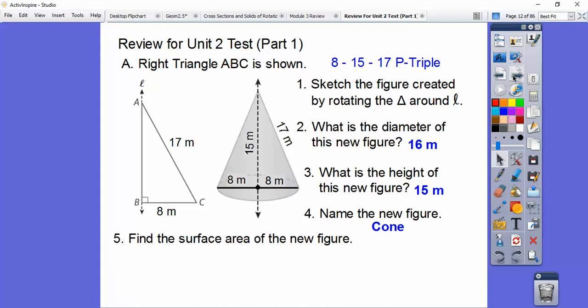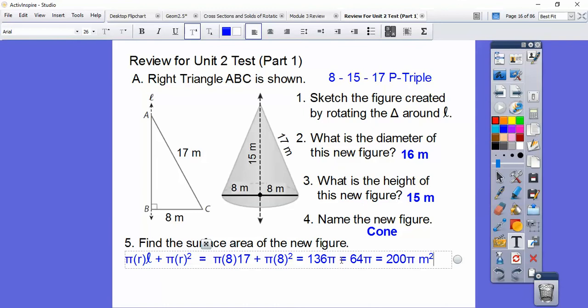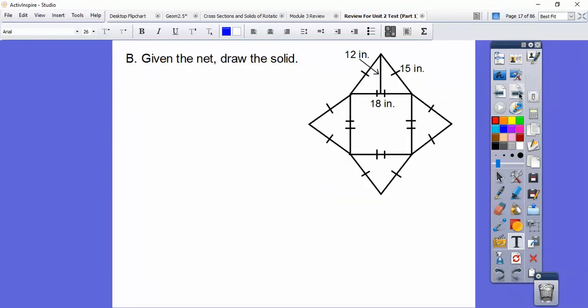Find the surface area of this cone. The surface area is pi r l plus pi r squared. We plug in the r and the l and we crank that out and we get 64 pi. I'm sorry, there's supposed to be a 64 pi plus. That's supposed to be a plus sign right there. So 136 pi plus 64 pi equals 200 pi meters squared.